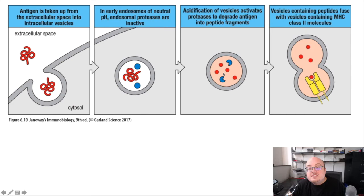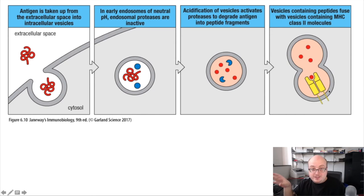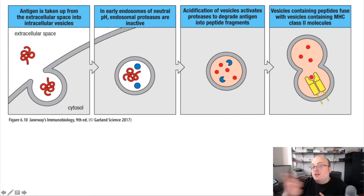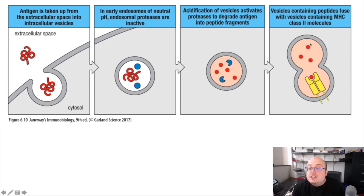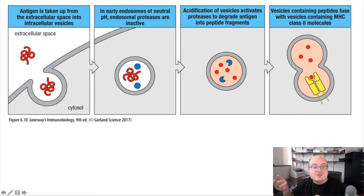Once this happens, these vesicles fuse with yet another pool of vesicles that contain MHC class II molecules that are coming from the rough endoplasmic reticulum. So once these vesicles fuse, the antigens can then be loaded onto the MHC class II molecule and then traffic to the cell surface for presentation.